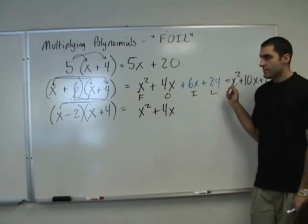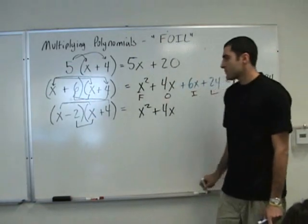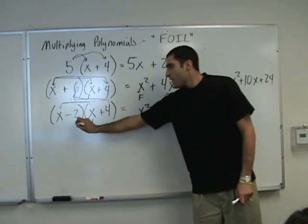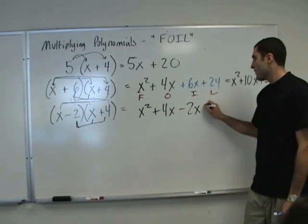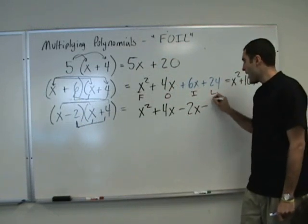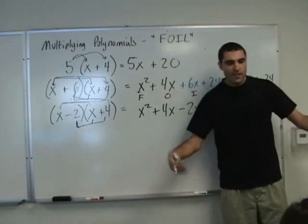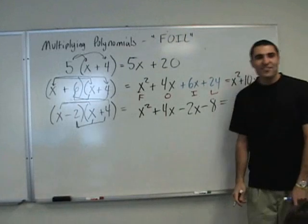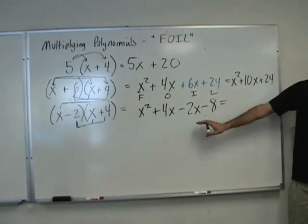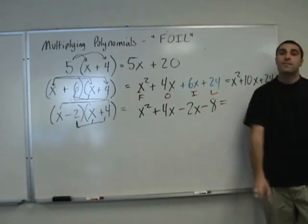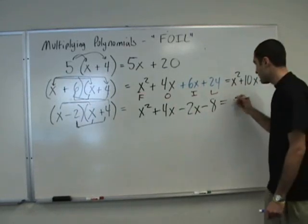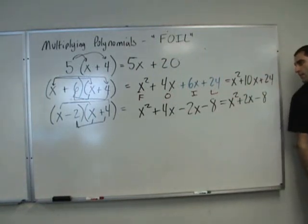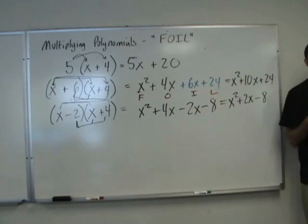i is inner, so that's negative x, which is negative 2x. Minus 2x. And then the last, which is negative 2 and 4, multiply them and that's negative 8, so minus 8. The last step is to simplify the middle two terms. x squared plus 2x minus 8. That's all it is.